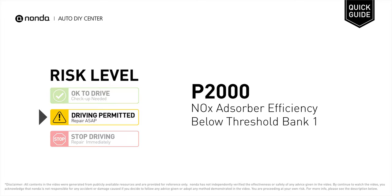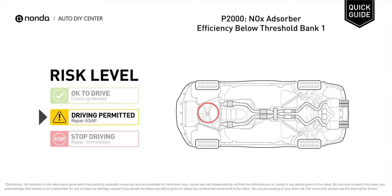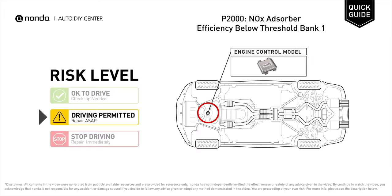B2000 is a diagnostic trouble code for NOX adsorber efficiency below threshold bank 1. Under this circumstance, short distance driving is permitted, but your vehicle should be repaired ASAP. It indicates a malfunction with the NOX trap which has an efficiency that is below the threshold for bank 1.